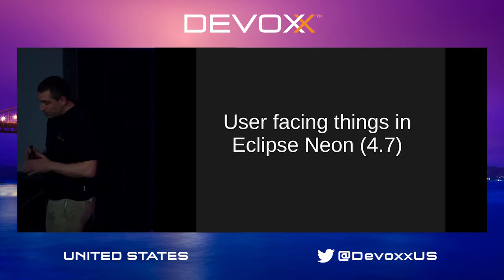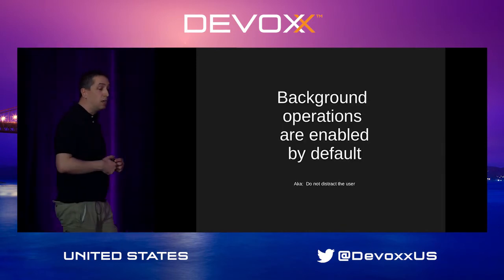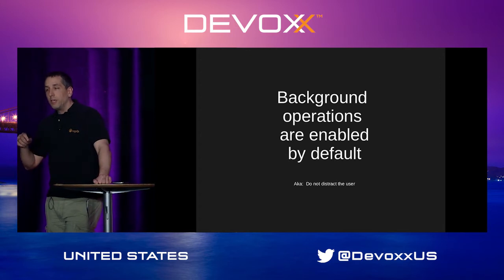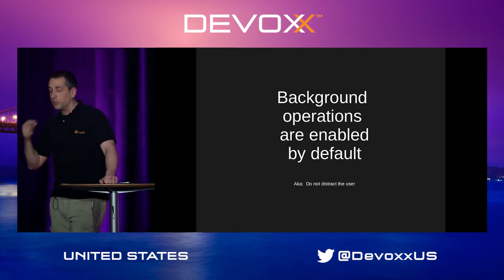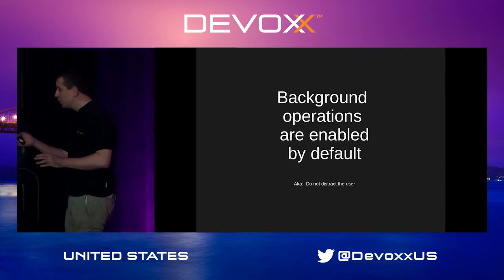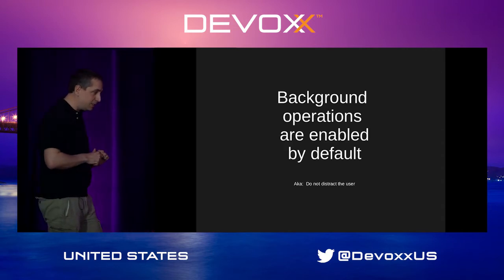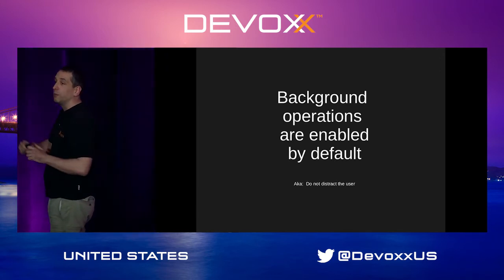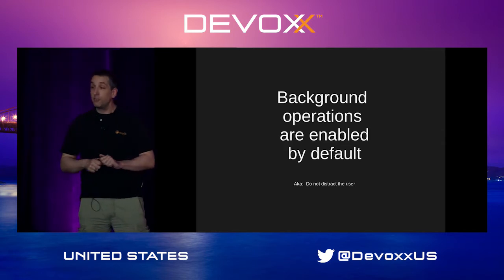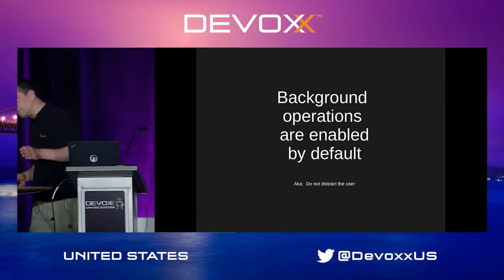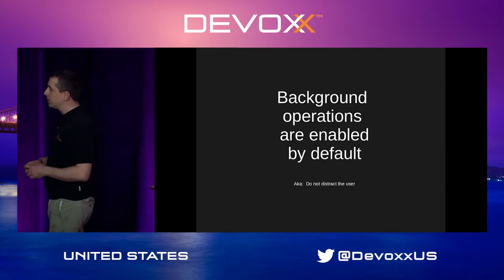Now for things you as a user may enjoy: we've enabled background operations by default. This actually came from me working a few weeks on an Android project with Android Studio — I returned to Eclipse and was fed up with dialogues popping in my face. Android Studio hides certain performance issues by putting a dialogue in your face, hiding it, and bringing up a new one. When I returned to Eclipse I immediately got a dialogue for something that could be run in the background. So we changed the preference — after a few weeks of discussion — and now everything runs in the background. As users, you'll notice it feels like everything just works immediately.